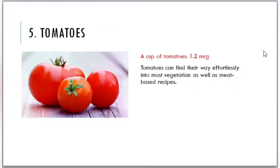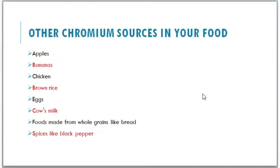A cup of tomatoes contains about 1.2 micrograms of chromium. Tomatoes can find their way into most vegetarian as well as meat-based recipes. Other food sources include apples, bananas, chicken, brown rice, eggs, cow's milk, foods made from whole grains like bread, and spices like pepper — these all contain a little amount of chromium.